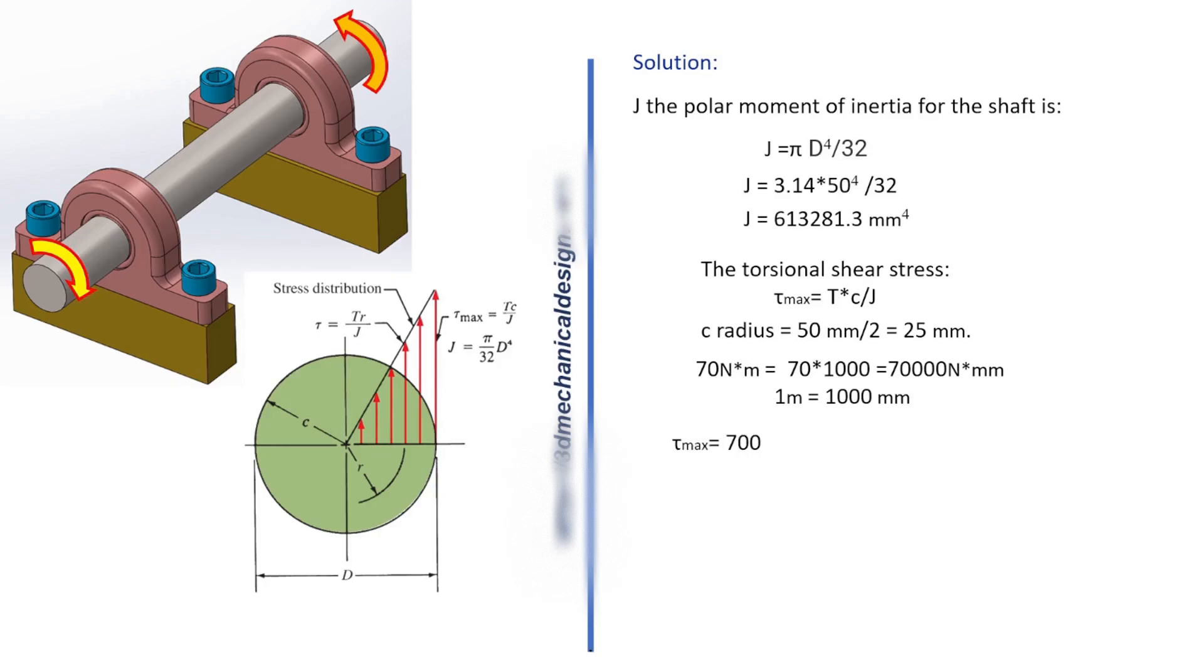τ max equals 70,000 times 25 divided by 613,281.3. τ max equals 2.85 newtons per square millimeter equals 2.85 megapascals.